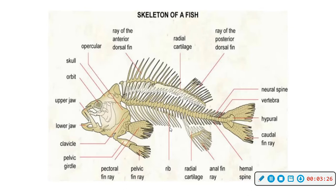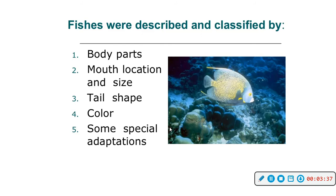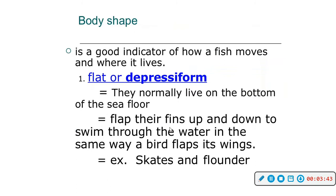Fishes are described and classified by body parts, mouth location and size, tail shape, color, and some special adaptations.